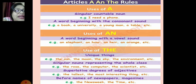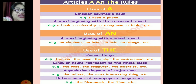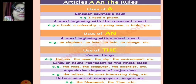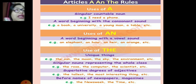For unique things like the environment, the sun, the moon, we use 'the'. Singular nouns representing the whole class: the rose, the computer, the scientist, etc. For superlative degrees of adjectives, we use 'the' — the tallest, the most interesting things. Before the names of famous newspapers: the Newsweek, the Times of India, the Hindustan Times — all these use 'the' before them.